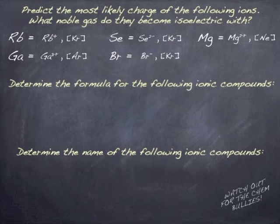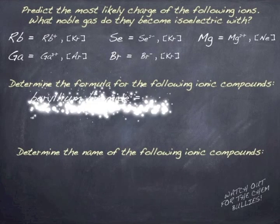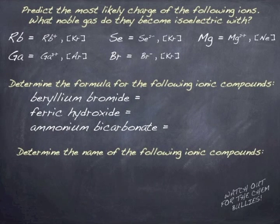And then we've got some ionic compounds here. So go ahead and name those. So beryllium, as an alkaline metal, is going to have a plus two charge. Bromide, as a halogen, is going to have a minus one charge. So we'll need two bromides to balance out one beryllium. Ferric hydroxide, as you remember, is a plus three charge. Hydroxide is a minus one. So you'll need three minus one charges to balance out the plus three charge of iron.